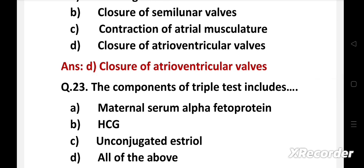Next question. The components of triple test includes - option A: maternal serum alpha-fetoprotein, B: hCG, C: unconjugated estriol, D: all of the above.